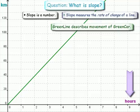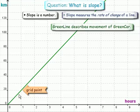This green line describes the movement of a green car. The x-axis is in hours and the y-axis is in kilometers. So let's look at some grid points on this line. Grid points are points where the line hits the grid.